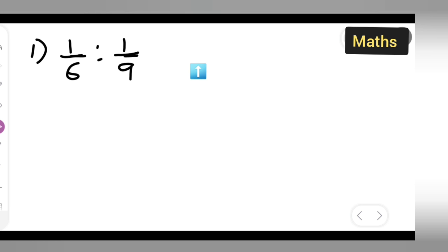Okay, so what is given: 1 upon 6 is to 1 upon 9. So what is given, you need to write down. Let us start. Let us write this in stepwise order. What is given? Given ratio.